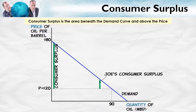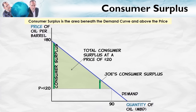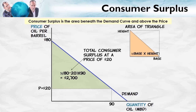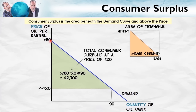Another consumer might value the oil less — they have a less-valued demand for the oil, and their consumer surplus is smaller. By adding up the consumer surplus for all consumers over all units, the total consumer surplus is the area beneath the demand curve and above the price. When we have a linear demand curve, it's easy to quantify this. Remembering from high school geometry that the area of a triangle is one-half base times height, the total triangle here is 80 minus 20, which is 60, times 90 divided by 2, equaling 2,700 — or 2.7 billion in millions. That would be the total consumer surplus from this market for oil.